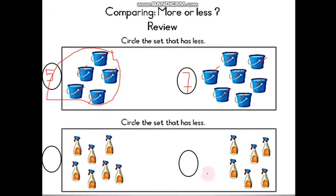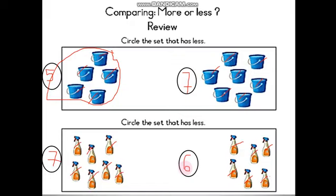Now we are going to circle the group which has less. We start counting: one, two, three, four, five, six, seven. And we write seven. Then we count the spray on the left: one, two, three, four, five, six. And we write six. Who has less — seven or six? Excellent! So I go and circle six.